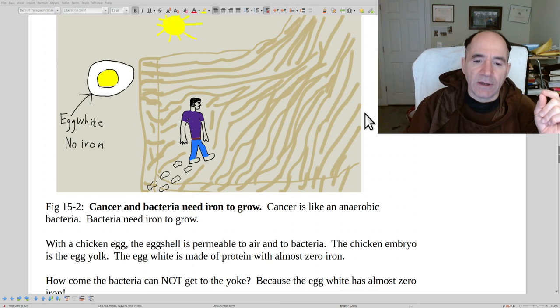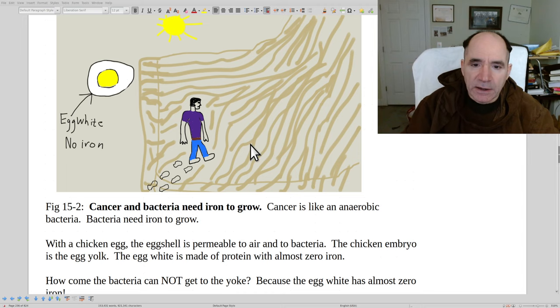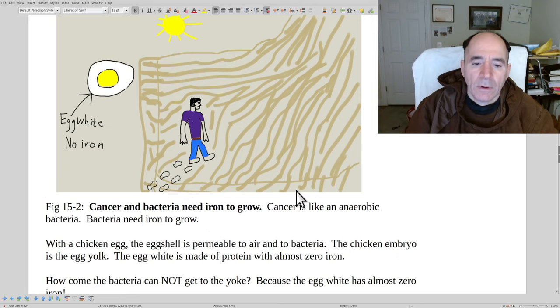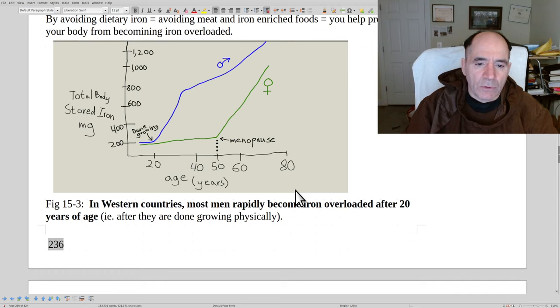You also just sequester it all around so they can never get started. Because they can't get through the egg white because there's no iron in it for them. Here's a little bit of how iron overload works. Up until about 20 years of age, men are growing pretty rapidly and they use up their bodily iron relatively well. But after that, they tend to stop growing and then they just start accumulating iron and become iron overloaded quite a bit.